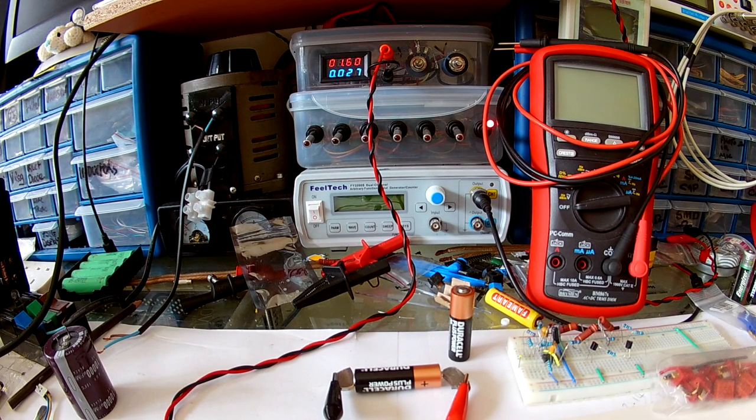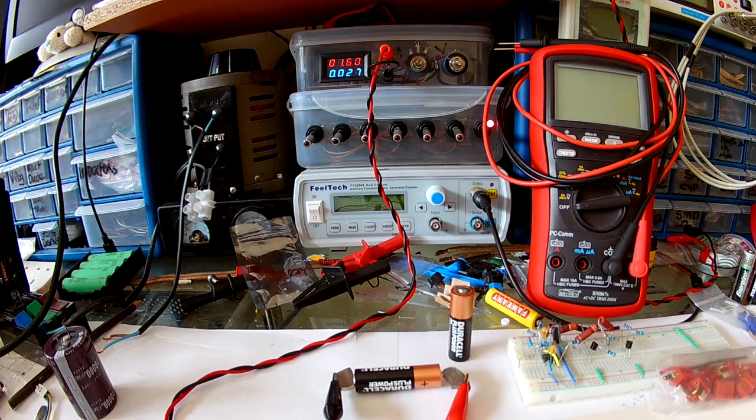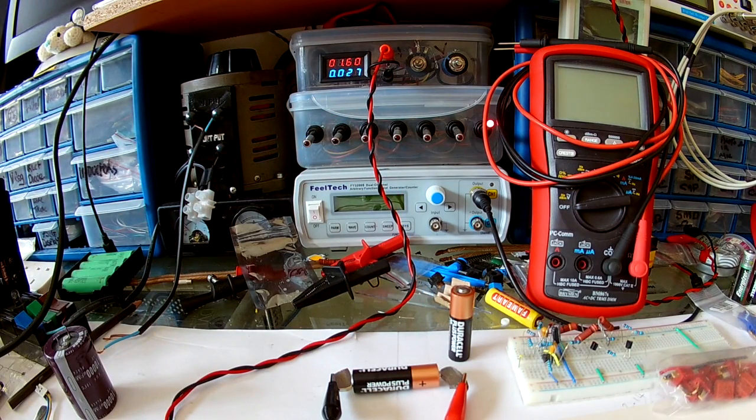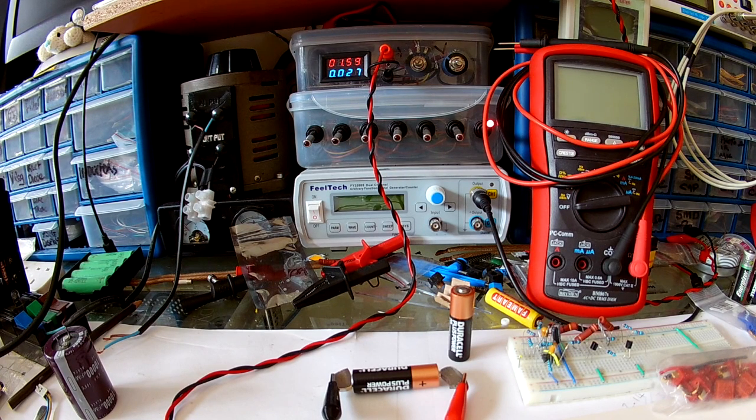All right, so it's still charging. It's cold to the touch. No overheating issues at all. The current is dropping. The voltage has gone up, it's just flicking between 1.9 and 60. And the battery is slowly being charged.